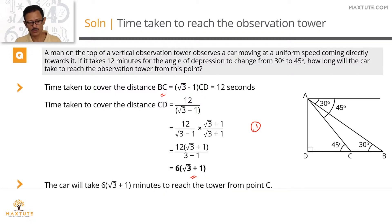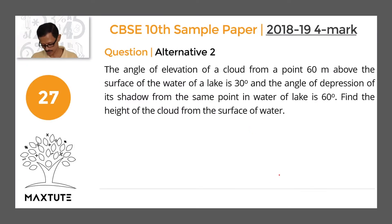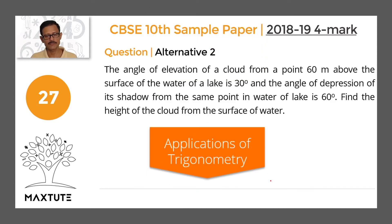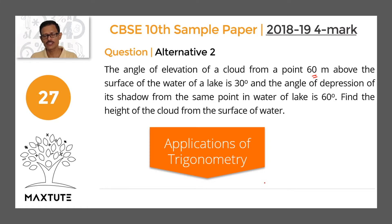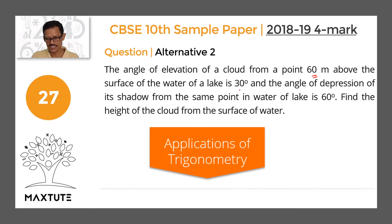Let's move on to alternative 2, also on heights and distances from applications of trigonometry. The angle of elevation of a cloud from a point 60 meters above the surface of a lake is 30 degrees, and the angle of depression of the cloud's shadow from the same point in the water is 60 degrees. Find the height of the cloud from the surface of the water.